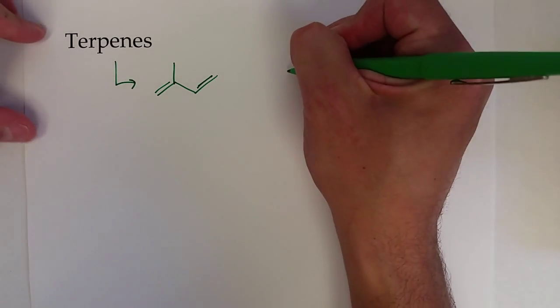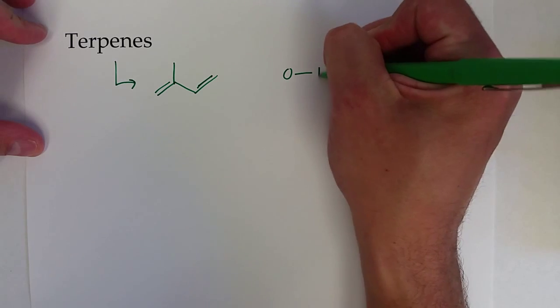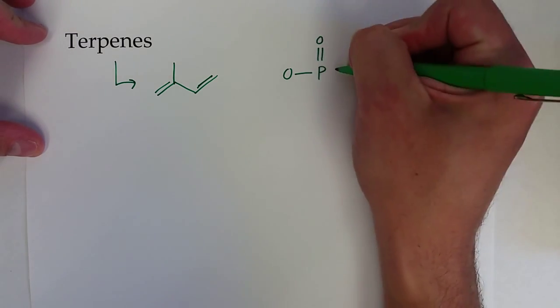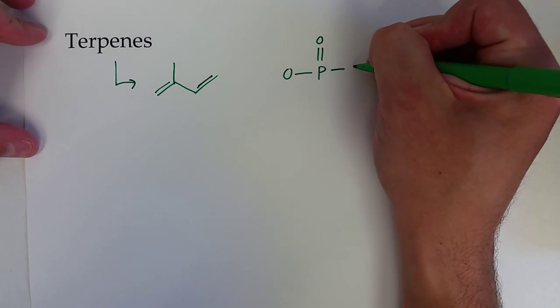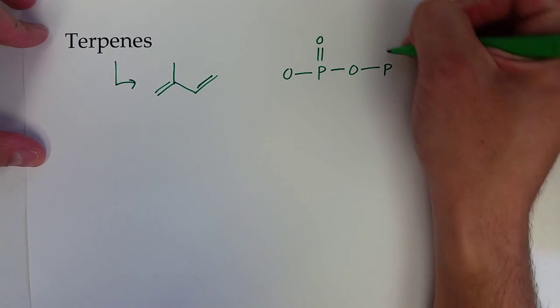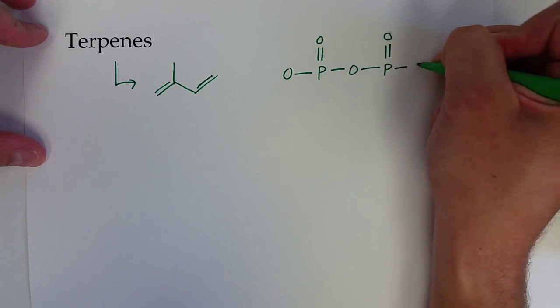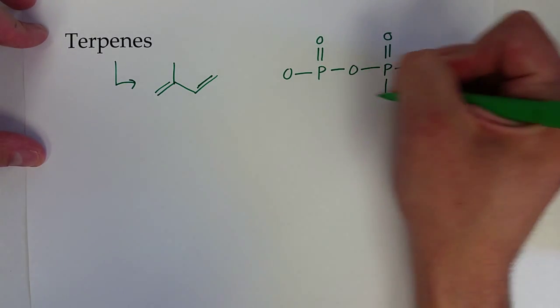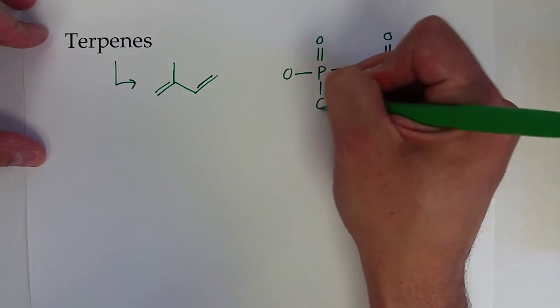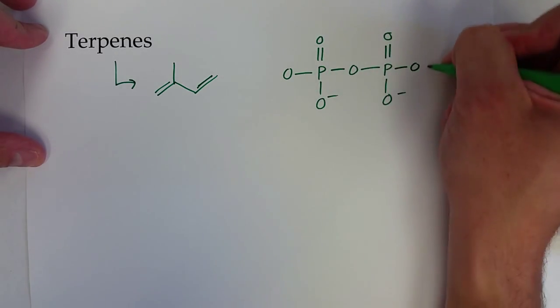A pyrophosphate group would be essentially - the way I think of it - basically two phospho groups put together, linked up. And of course, they can have several different scenarios.